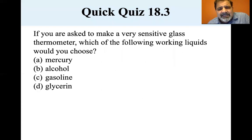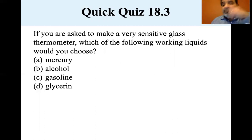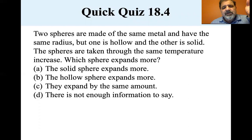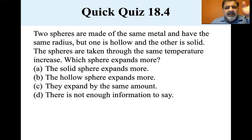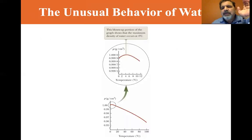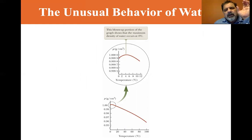If you're asked to make a very sensitive glass thermometer, which working liquid would you choose? Remember which had the very high coefficient of expansion — it was gasoline, and sure enough that's the answer. Second question: two spheres are made of the same metal with the same radius, but one is hollow and the other solid. They undergo the same temperature increase. Which sphere expands more? Thinking back to our washer example, they expand by the same amount.